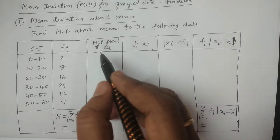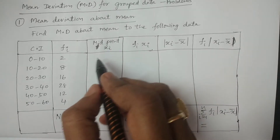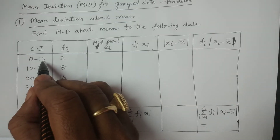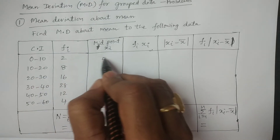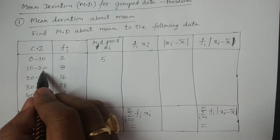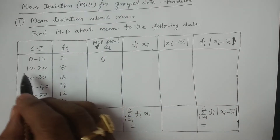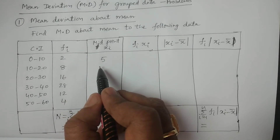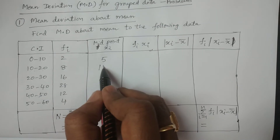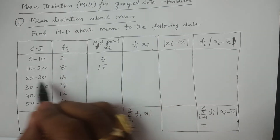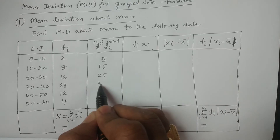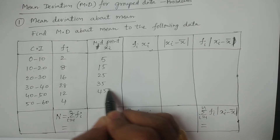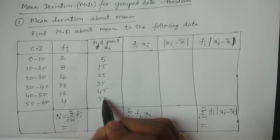Now calculate the midpoints. For 0 to 10: (0+10)/2 = 5. For 10 to 20: (10+20)/2 = 15. Similarly, the midpoints are 25, 35, 45, and 55.